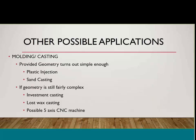Other possible applications: the demold tool tries to optimize the mesh in a shape conducive to molding — so if the geometry turns out simple enough, you could make a plastic injection mold or do some sand casting. If the geometry is still fairly complex, you might be able to do investment casting or lost wax casting. Possibly even a five-axis CNC machine could handle most of these.